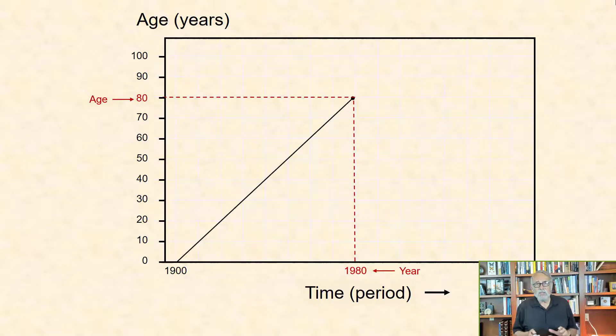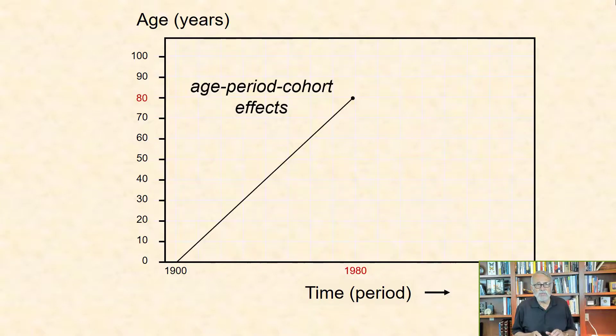The Lexis Diagram is a powerful conceptual and heuristic tool used for visualizing and understanding the concept of age-period-cohort effects.